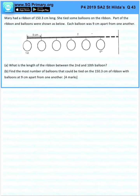Question 43. Mary had a ribbon 150.3 cm long. She tied some balloons on the ribbon. Part of the ribbon and balloons were shown below. Each balloon was 9 cm apart from one another.